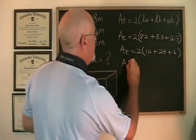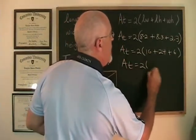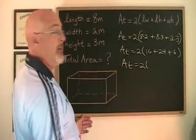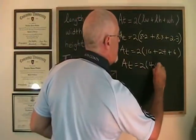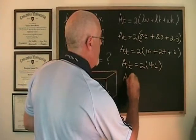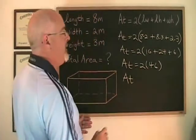16 plus 24 plus 6 is 46, and 2 times 46 is 92.